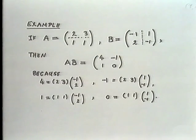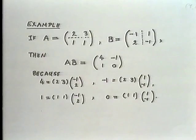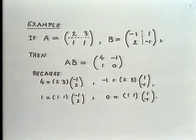Let's do this in a simple numerical case. Take for A the matrix [2,3; 1,1] which we've had before, and for B the matrix [-1,1; 2,-1]. We divide A horizontally into two rows and B by a vertical line into two columns, and form the inner products. The inner product of the first row of A [2,3] with the first column of B [-1, 2] gives 4, and proceeding systematically we get four numbers: the product AB equals [4,-1; 1,0].